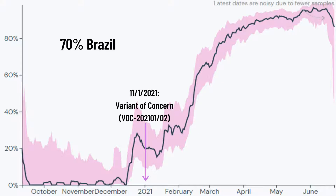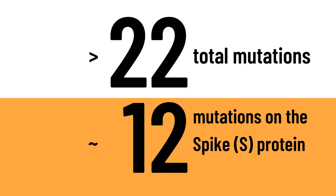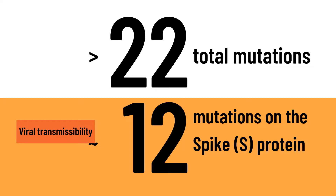What are the key mutations acquired by the gamma variant that make it a variant of concern? From the genetic sequencing of many virus samples from infected individuals, it was discovered that the gamma variant has accumulated over 22 mutations, with about 12 mutations on the spike protein. This is significant as the spike protein is involved in both the transmissibility of the virus and the immune response by the host against the virus.